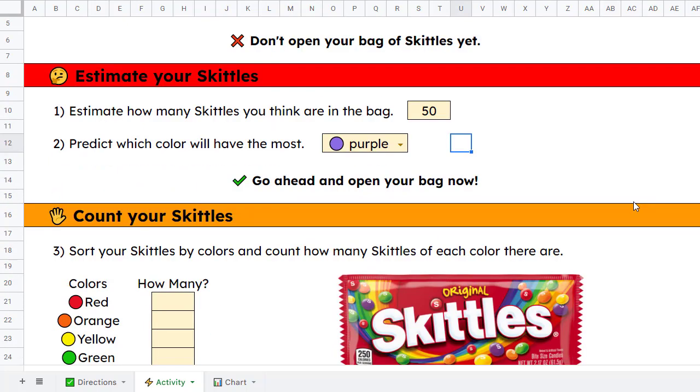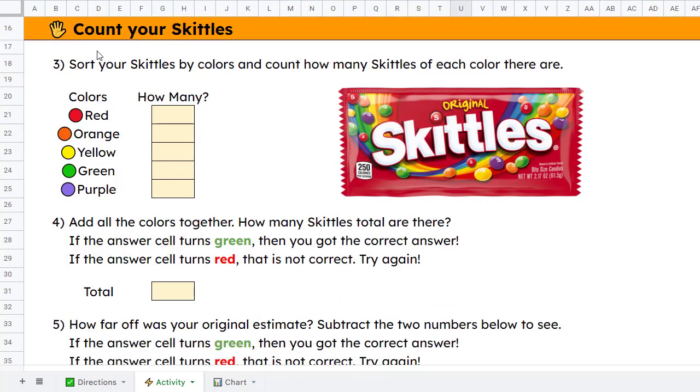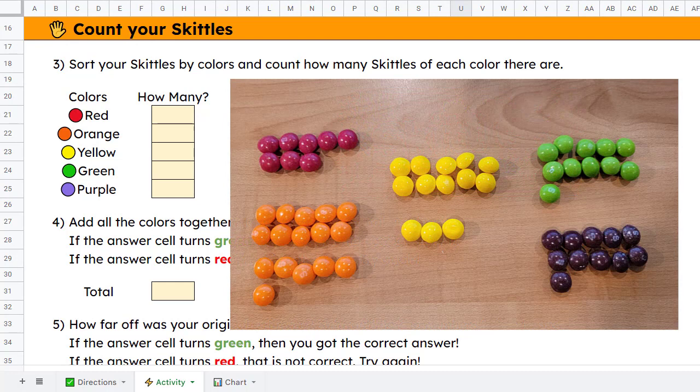All right, let's move on down to the next activity. For this activity, the students will count their Skittles. So at this point, they will open their bag and then sort the Skittles by colors and then count how many Skittles there are of each color. Let's try that out now. All right, I've got all my Skittles out. I will now separate these by color and we'll see what I've got.